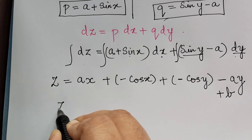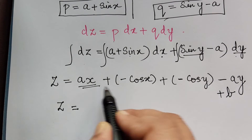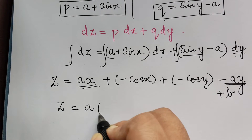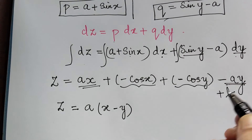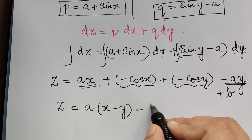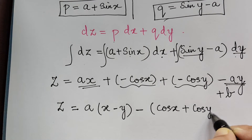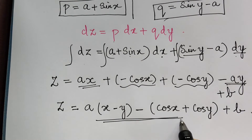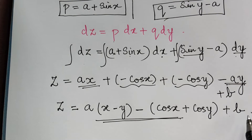Now gathering terms: ax and minus ay have a common factor a, giving a times x minus y. The cosine terms have a negative sign in common, giving minus of cos x plus cos y. So the solution is z equal to a multiplied by x minus y, minus of cos x plus cos y, plus b.